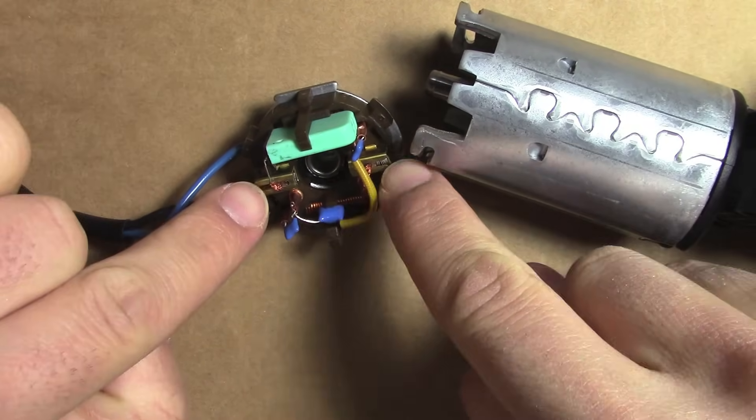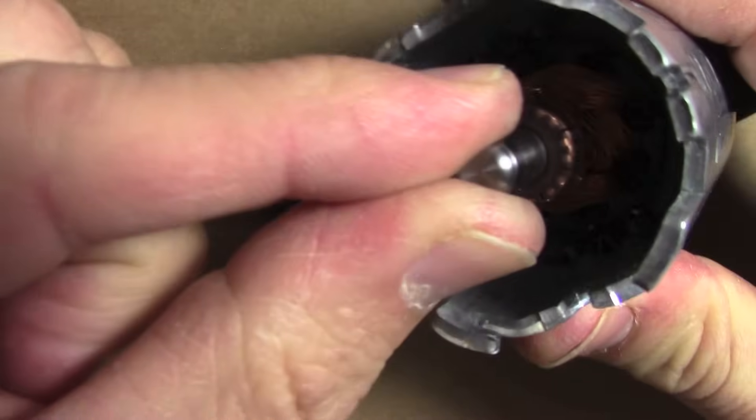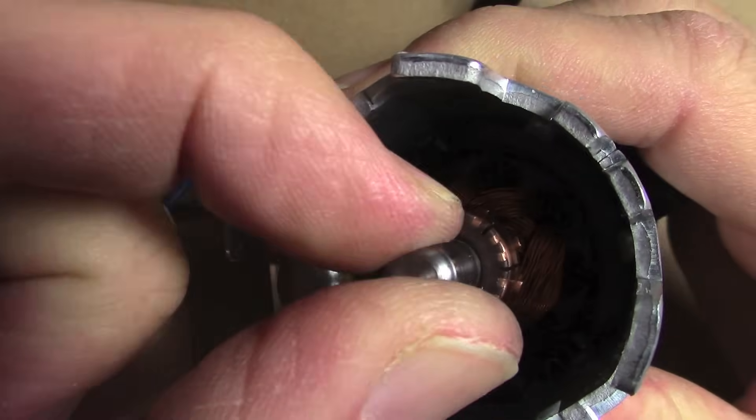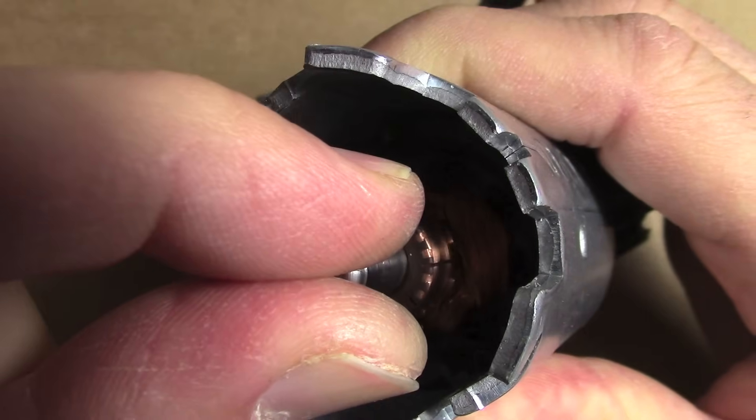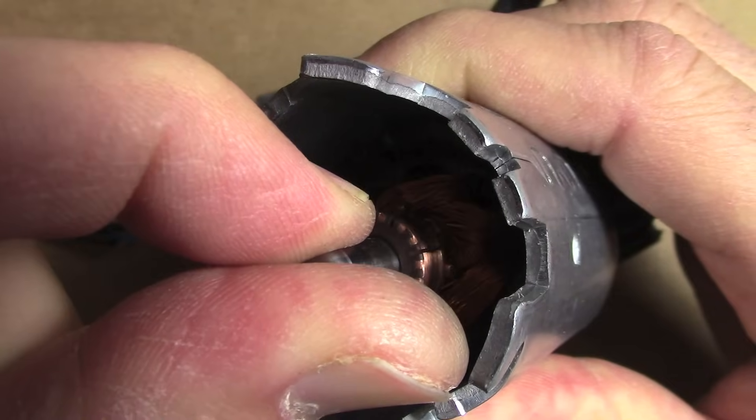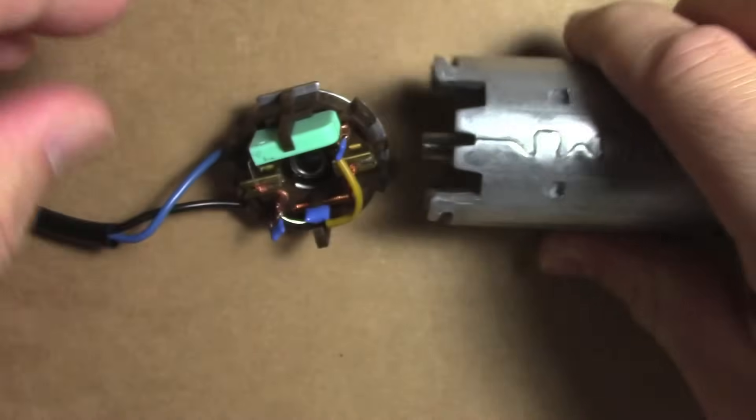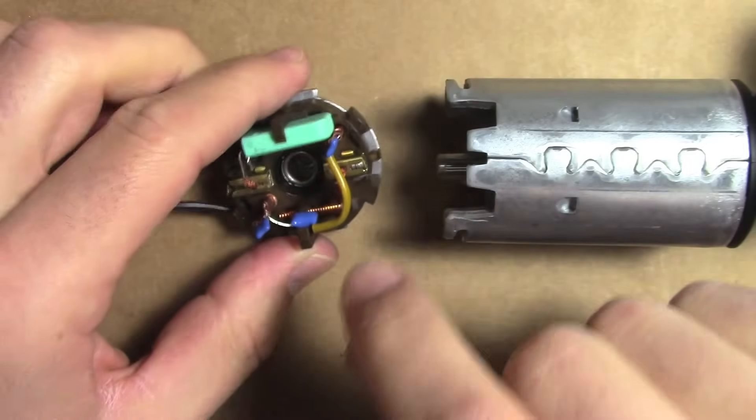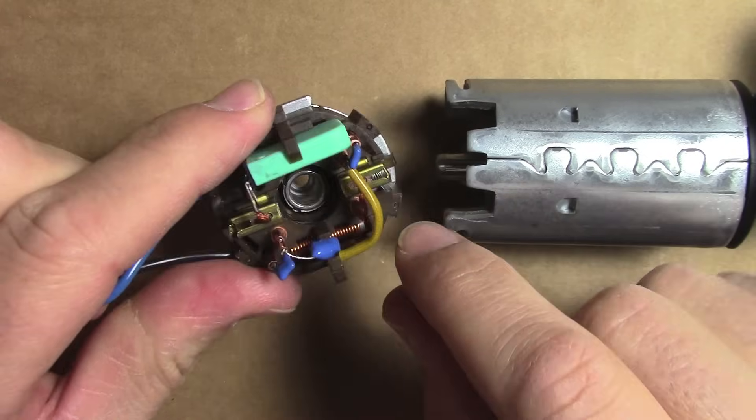It alternates the electric current back and forth as it spins. So there's always one touching this little cylinder of copper. You can see the splits in it. So it keeps flicking and contacting alternately to make the motor spin.